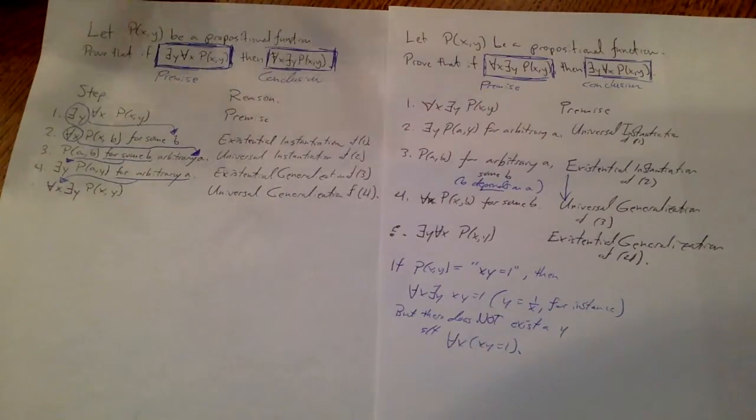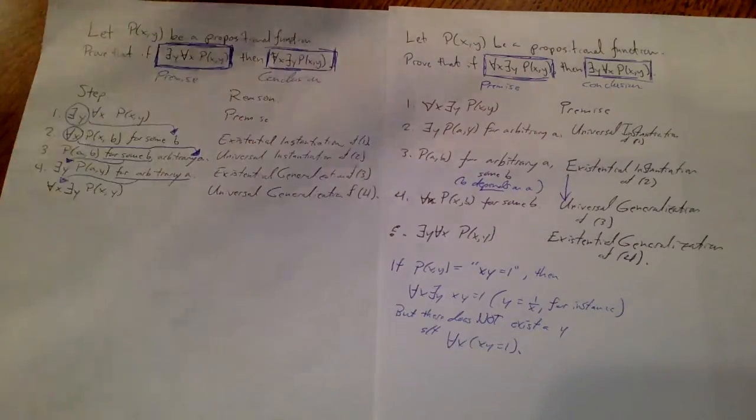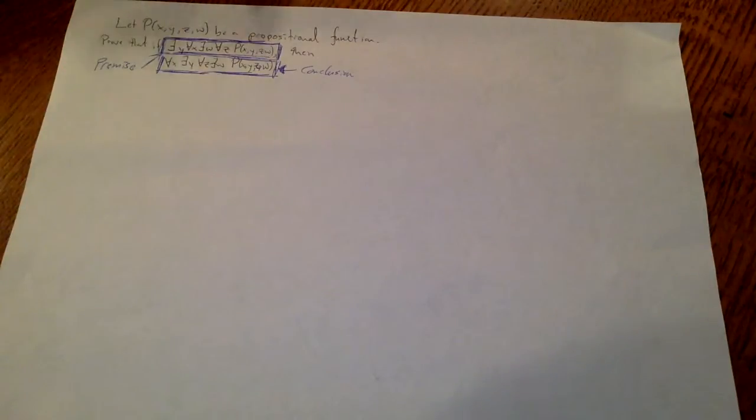In order to show you how this works for a valid proof, I'm going to give you a more complicated proof. Let P(x,y,z,w) be a propositional function. Prove that if there exists a y for all x, there exists a w for all z, P(x,y,z,w), then for all x there exists a y for all z there exists a w P(x,y,z,w). I've taken my y and x pairs and alternated their quantifiers, and the w and z quantifiers I've alternated as well. As I go down the line, I'm going to use existential instantiation, universal instantiation, existential instantiation, universal instantiation. Then I'll use existential generalization, universal generalization, existential generalization, universal generalization, and I'll show you how the dependency statements work.